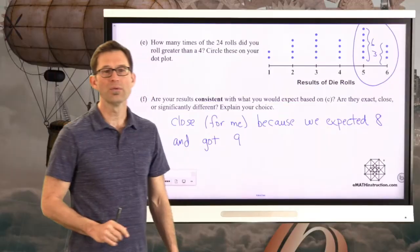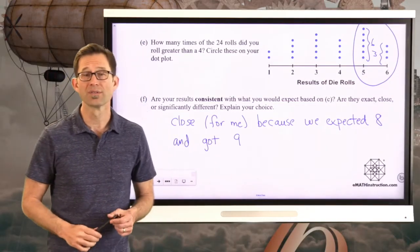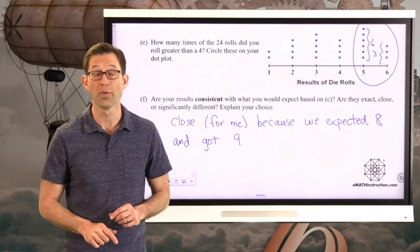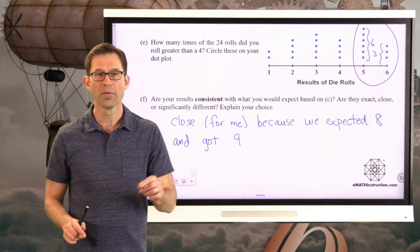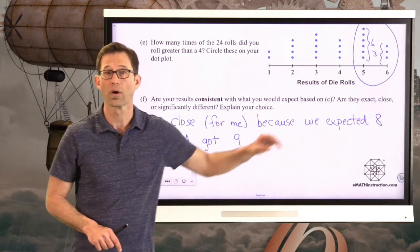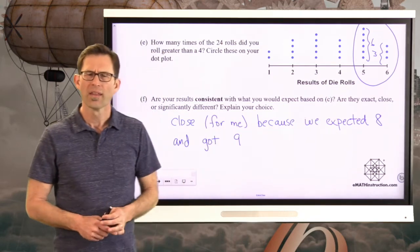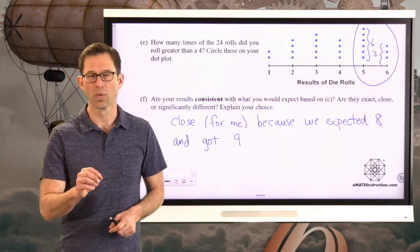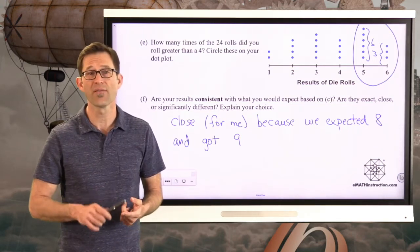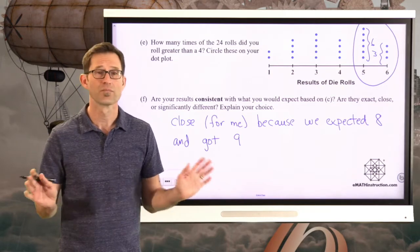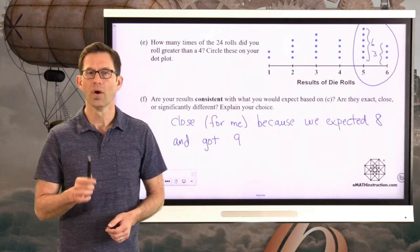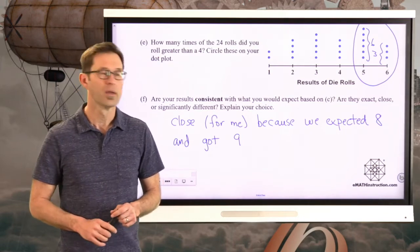So mine wasn't exact. And again, you could have it exact. If you got exactly 8, awesome, then they were exactly the same. I would say close, I'm going to put in parentheses for me, because we expected 8 and got 9. Now, why would you say significantly different? Well, significantly different: We're expecting 8. Maybe you got 1. Maybe you got only 2. Maybe you got none at all. That would be strange. It would also be strange if you got 16 or 17 out of the 24. We're way up here. That would start to make you wonder if there was something wrong with the die that you were using. But if you got in the realm of 6, 7, 8, 9, 10, that's all reasonable. Outside of that, it starts to be different enough that you might wonder what's going on with the die.